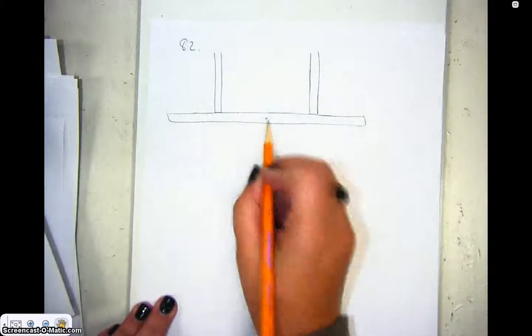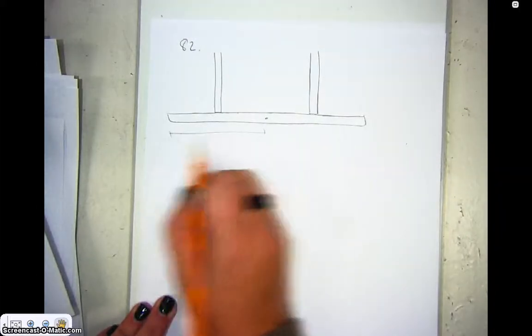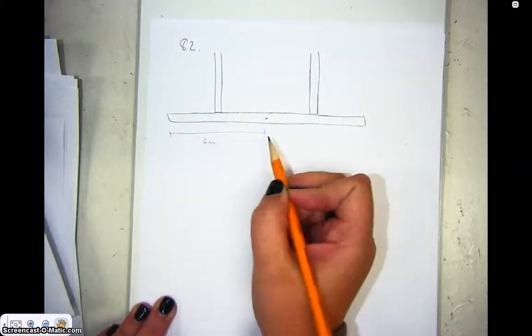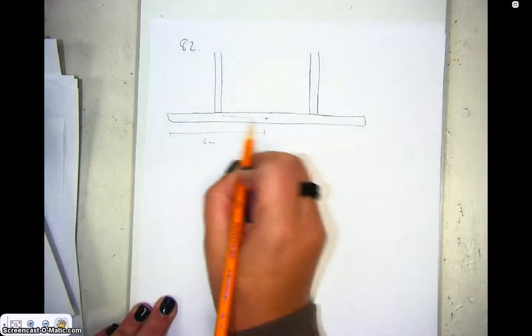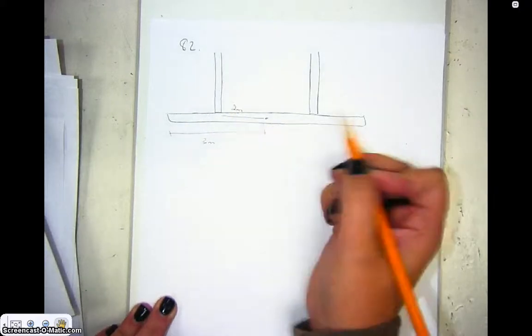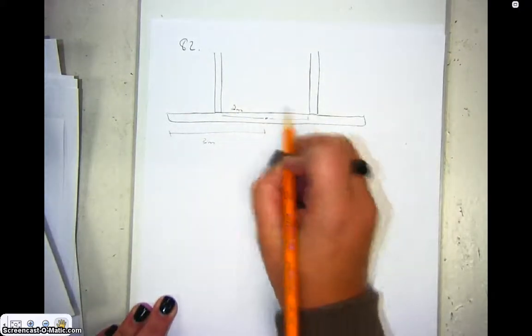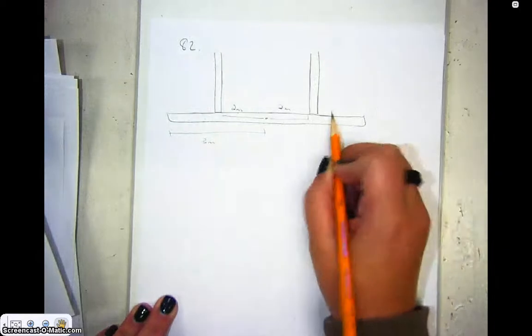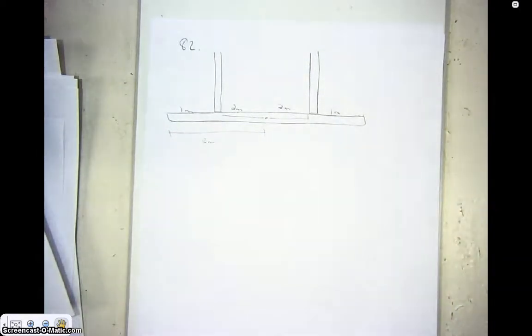And it tells us that the beam is 6 meters long, so the center of mass is like 3 meters here, and then we have 2 meters right here, and 2 meters right here, and 1 meter right here, and 1 meter right there.